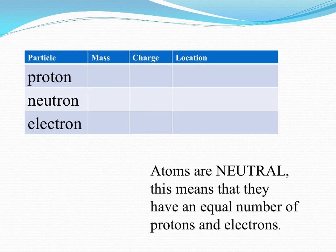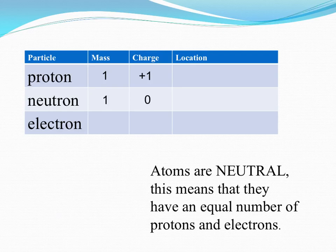A proton has a mass of one and a charge of plus one. You must remember to put the plus in front of the charge of the proton. And of course the location of the proton is in the nucleus. A neutron also has a mass of one but it has no charge, a charge of zero. And of course the location of the neutron is also in the nucleus.